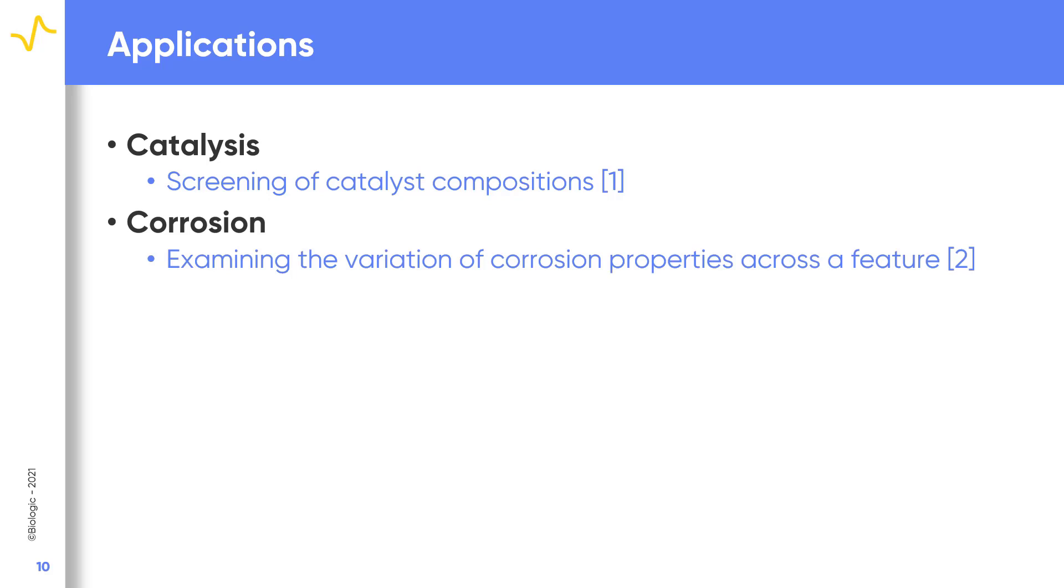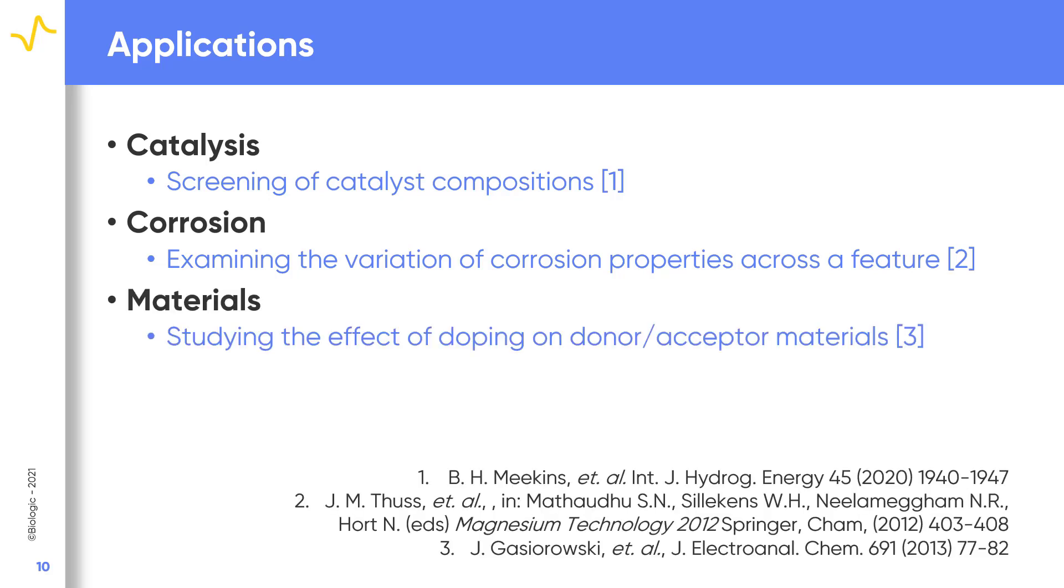SDC has found use in a number of different fields where the direct measurement of a local area has been key. This includes catalysis, where it has been used to screen the effect of catalyst composition on catalytic activity. Corrosion, where SDC has allowed local variations in corrosion properties across a feature to be measured. And materials, where it has allowed local doping effects to be explained.